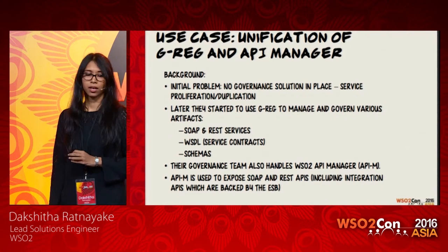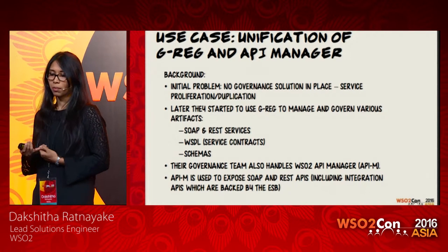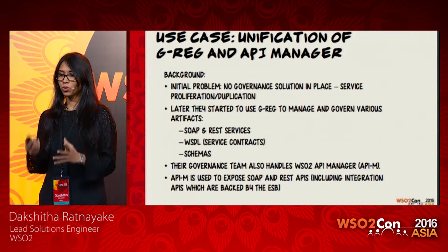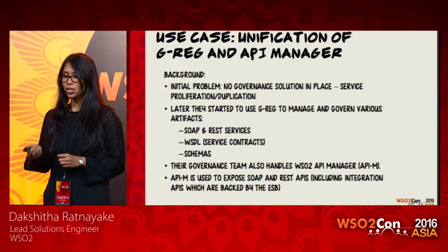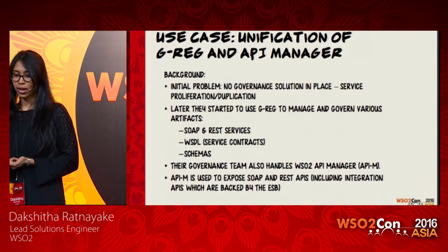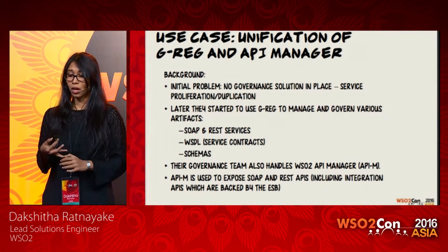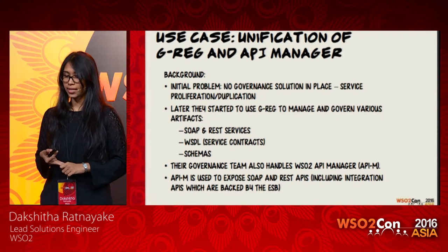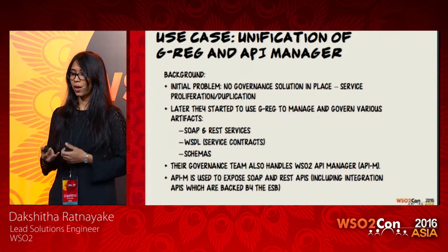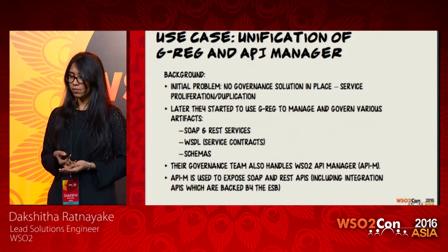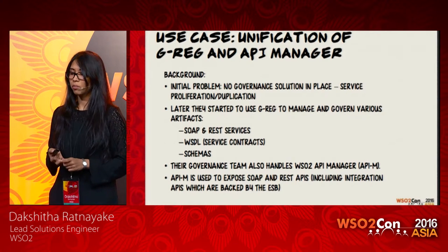The second use case is very important because it paved the way for the new governance registry 5 series. The use case is unification of governance registry and API manager. This customer didn't initially have a governance solution in place, so there was service proliferation and duplication. Later they started using the governance registry to manage and govern various artifacts — services, WSDLs, schemas, etc. The governance team also handled the WSO2 API manager, which was used to expose APIs.